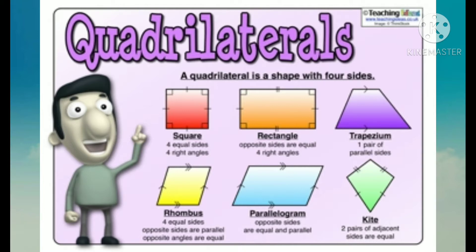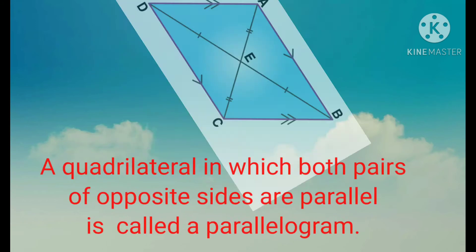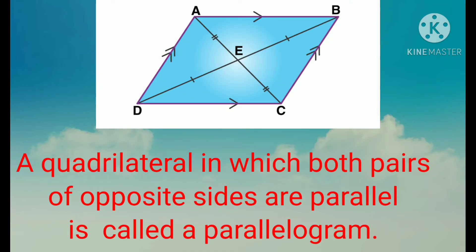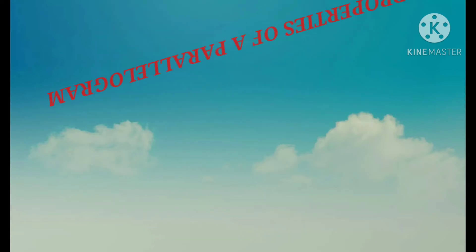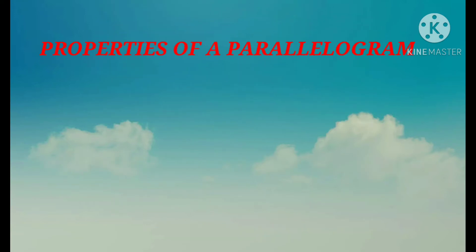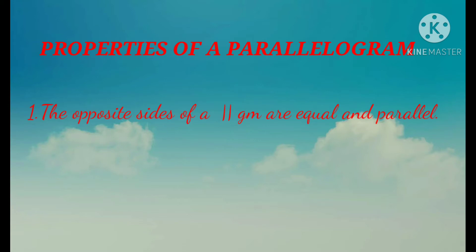A parallelogram is a quadrilateral in which both pairs of opposite sides are parallel. Properties of parallelogram are: first, the opposite sides of a parallelogram are equal and parallel.